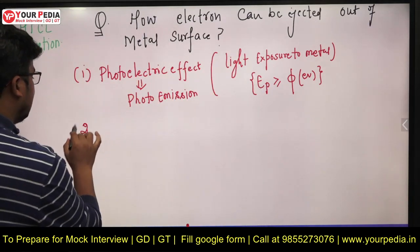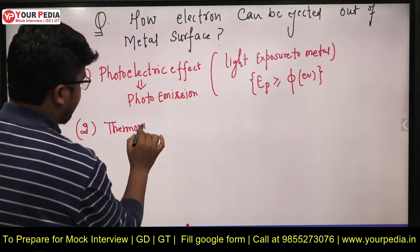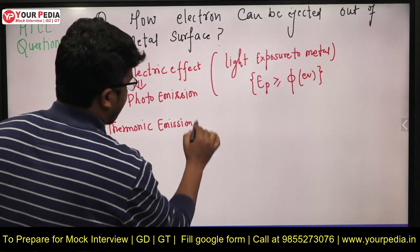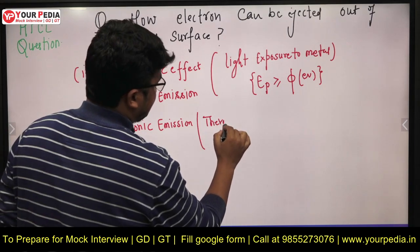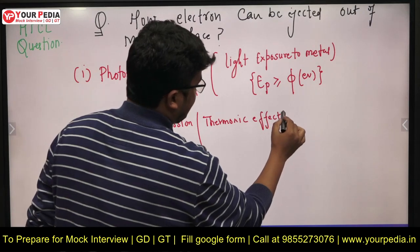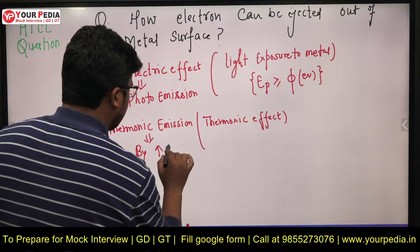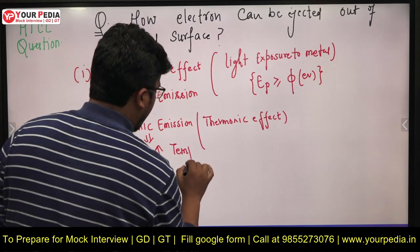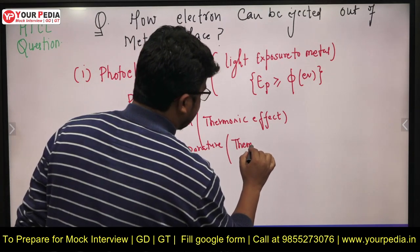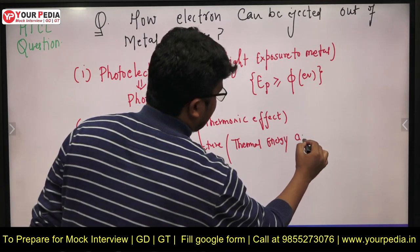There is a second method, which is thermionic emission or the thermionic effect. How? By increasing the temperature — that is, by providing thermal excitation. Thermal energy acts as the cause for electrons to be ejected.